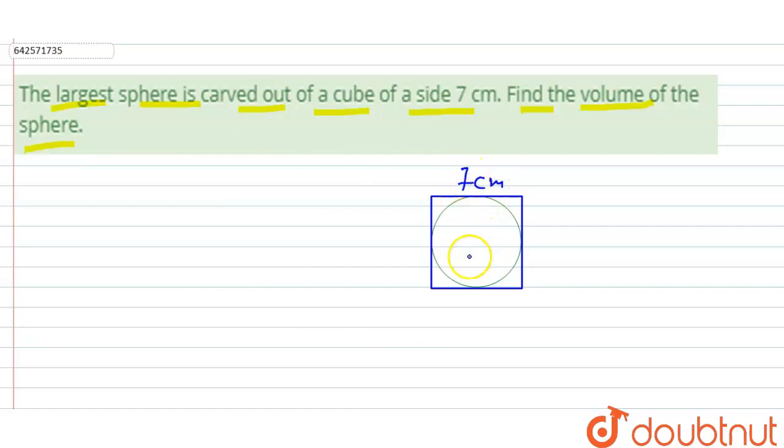This is cube of side 7 centimeter. That means the diameter of the sphere would be 7 centimeter. We can say now the diameter of the sphere is 7 centimeter.